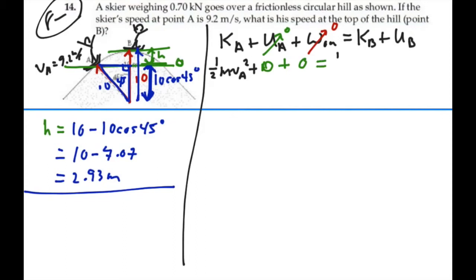We are going to have kinetic energy at B. One half mass velocity of B squared. And we do have potential energy at B. Let's just call that mgh where H has been defined to be 2.93 meters.